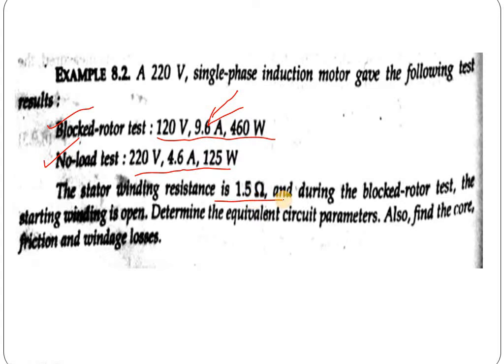The stator winding resistance is given as 1.5 ohm. During the block rotor test, the auxiliary winding is kept open. We have to determine the equivalent circuit parameters and also find the core loss, friction, and windage loss. In this problem, various parameters have been presented from both no-load and block rotor test readings, and the stator winding resistance has been given.